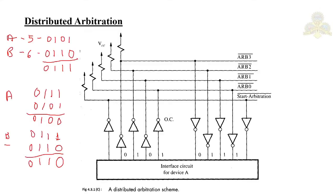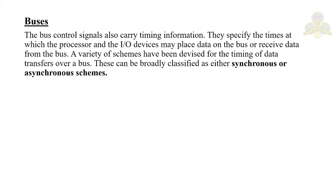Welcome back to Computer Organization course. Next we will see about buses. The processor, main memory, and I/O devices are interconnected by means of a common bus. The function of the bus is to provide a communication path for transferring data. The bus also includes lines needed to support interrupts and arbitration.